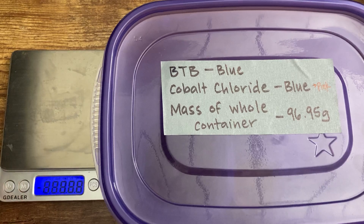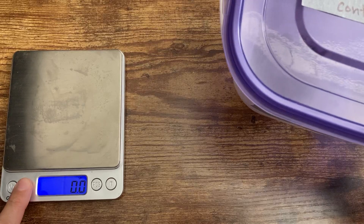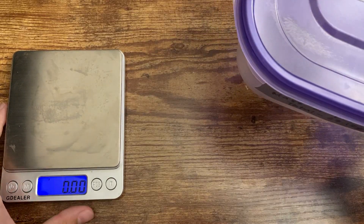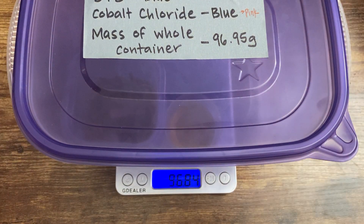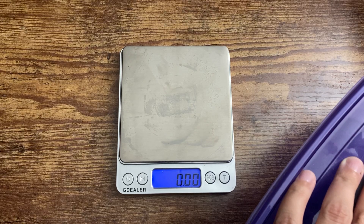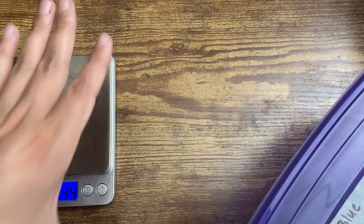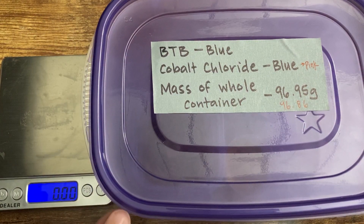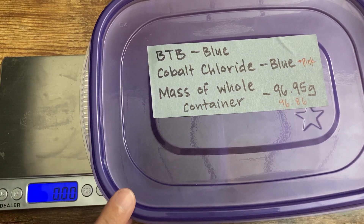The first thing I want to do is measure the mass of the whole container. I need to make sure this is on grams — it's currently reading zero. When I put the whole container on, the mass is 96.86 grams. So the mass of the whole container has actually gone down a little bit. That could be because this is not making a perfect seal, and it might have lost a little bit of air.